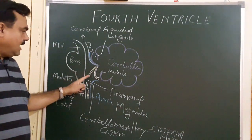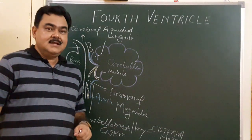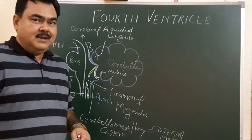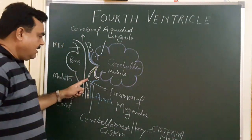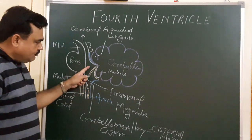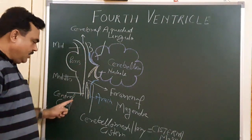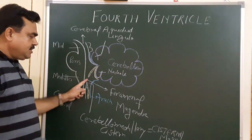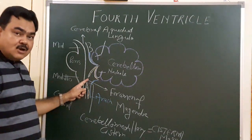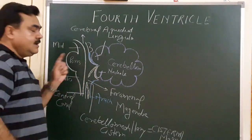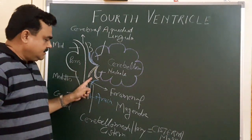The fourth ventricle also communicates with the cisterna magna on the lateral side by two openings — right and left. These are the right and left lateral apertures, known as the foramina of Luschka. So the fourth ventricle communicates superiorly with the third ventricle through the cerebral aqueduct, inferiorly with the central canal, and posteriorly and laterally with the cisterna magna through the foramen of Magendie and foramina of Luschka.